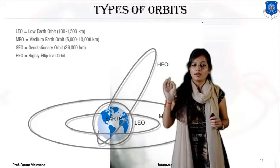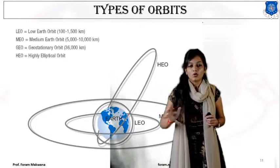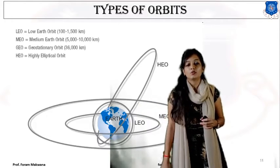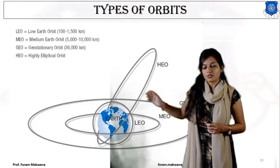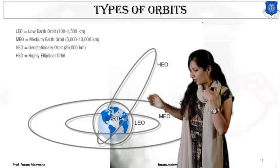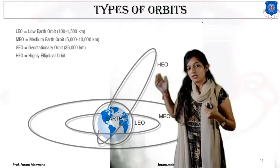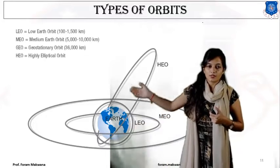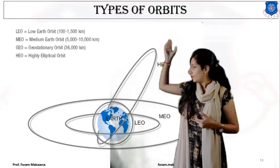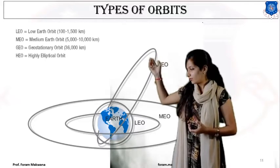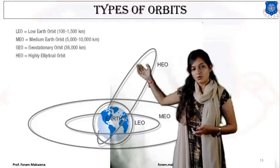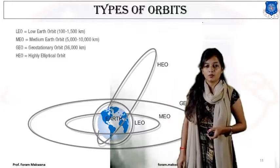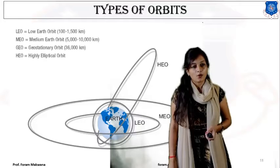Those points are called apogee and perigee respectively, which we will discuss in chapter two. So the types of orbit based on distance from the surface of the Earth are: LEO at 100 to 1,500 km, MEO at 5,000 to 10,000 km, GEO at approximately 36,000 km, and HEO at approximately 25,000 km.